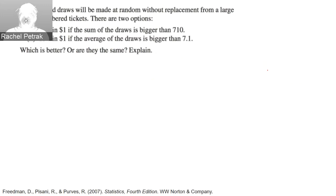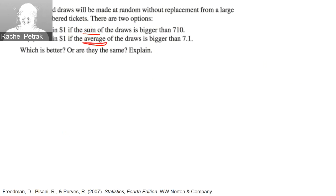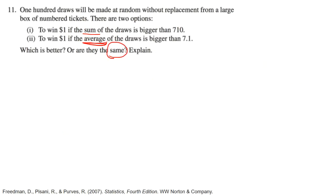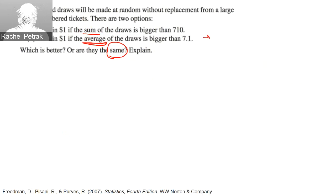100 draws are made at random without replacement. There are two options: win one dollar if the sum of draws is bigger than 710, or win if the average of draws is bigger than 7.1. Is one better or are they the same? They are actually the same, because if the average of 100 draws is 7.1, then the sum of those 100 draws is 7.1 times 100, which equals 710.